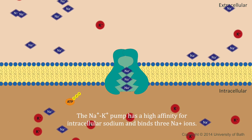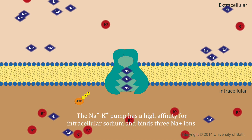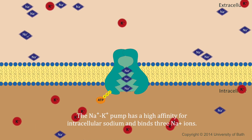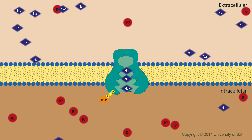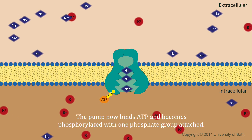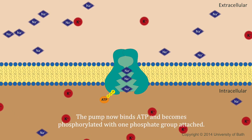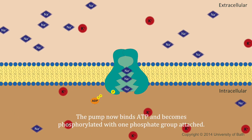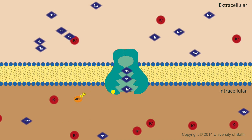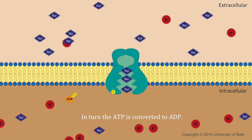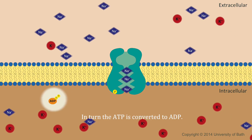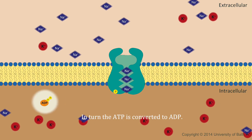The pump has a high affinity for intracellular sodium and binds free sodium ions. The pump then binds ATP and becomes phosphorylated, with one phosphate group attached. In turn, the ATP is converted to ADP.